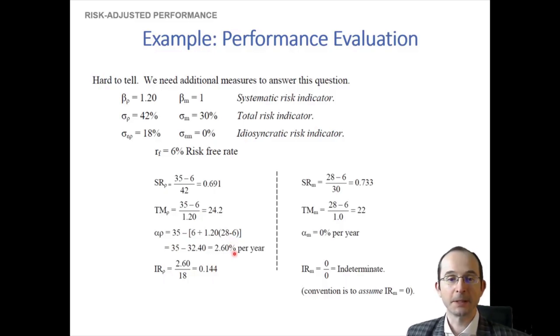So then finally, let's actually compute the information ratio, which we'll take that into account. So we'll take our alpha, we'll divide it by our idiosyncratic risk of 18%, and we see that that's 0.14. Of course, for the market, we don't really know what its information ratio is, because it has neither alpha nor idiosyncratic risk. So let's just say that that's 0. Generally, for all of these, higher is better, but we can't really make a very credible information ratio comparison.